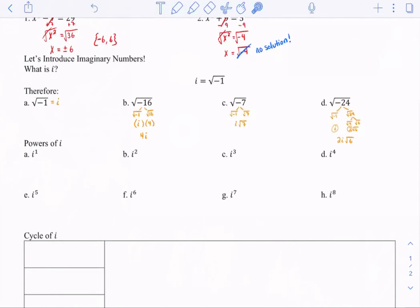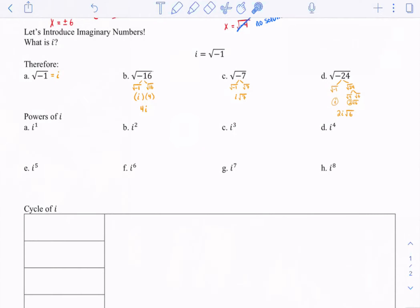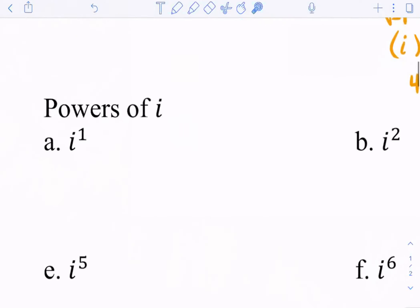Now I want to discuss the powers of i. What I mean by powers of i is i to the first power, i to the second power, i to the third power, i to the fourth power. These are going to be used frequently now that we've learned about imaginary numbers. Let's see what each one means.